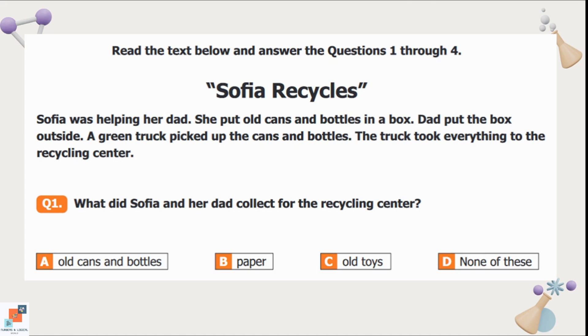Read the text below and answer questions 1 through 4. Sophia recycles. Sophia was helping her dad. She put old cans and bottles in a box. Dad put the box outside. A green truck picked up the cans and bottles. The truck took everything to the recycling center.